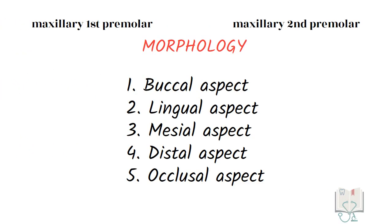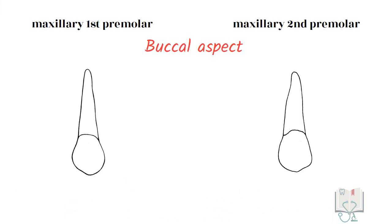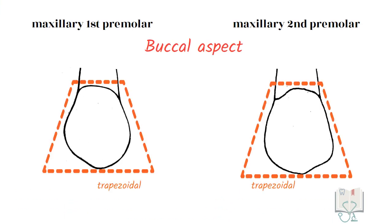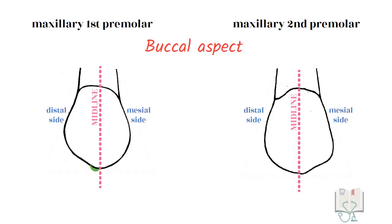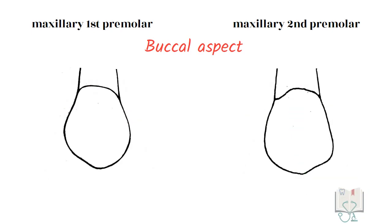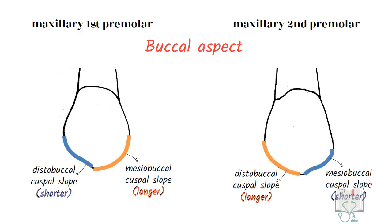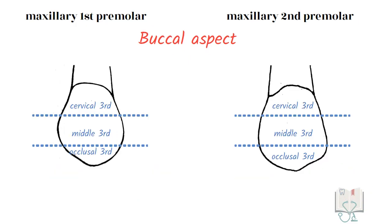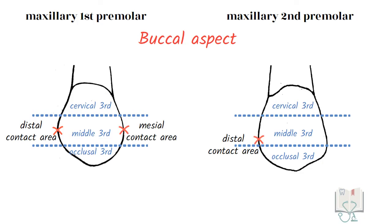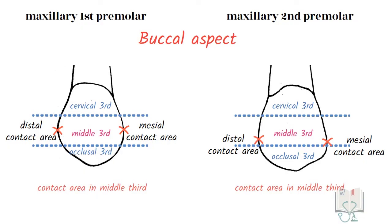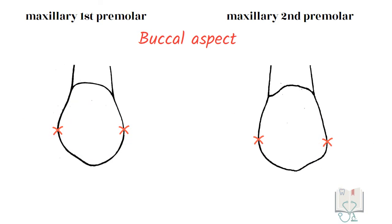Now let us study the morphological differences in detail from each aspect. Starting with the buccal aspect, both premolars have a trapezoidal outline form. The buccal cusp tip in the first premolar is distal to the midline, whereas in the second premolar it is mesial to the midline. In the first premolar, the mesio-buccal cuspal slope is longer than the disto-buccal cuspal slope, whereas in the second premolar it is the opposite. Both contact areas in first and second premolar are in the middle third.